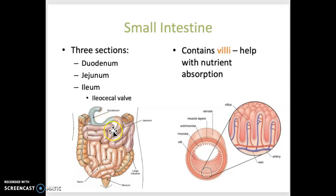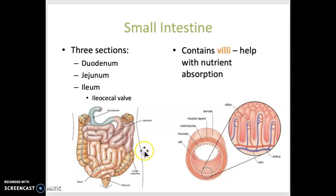The small intestine is coiled up. It's about 20 feet long and it's coiled so that it can fit in the abdominal cavity. It consists of three parts: the duodenum, which is the first about 10 inches or so; the jejunum, the middle 10 feet; and the ileum, the last 12 feet. The small intestine contains villi, which are microscopic finger-like projections that help with absorption of nutrients. A lot of chemical digestion happens here due to secretions from the pancreas and the liver.